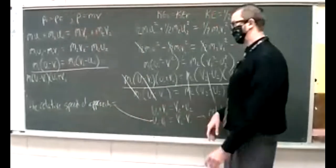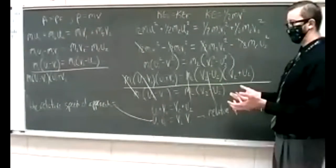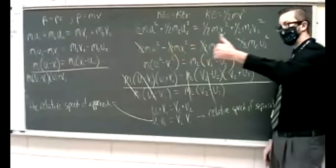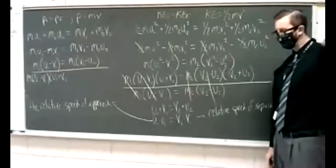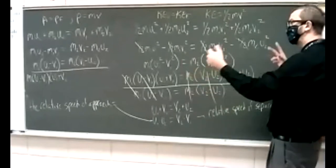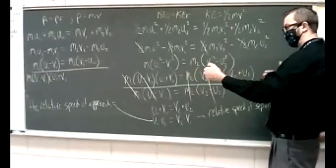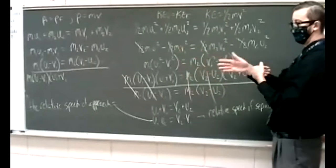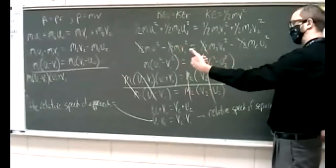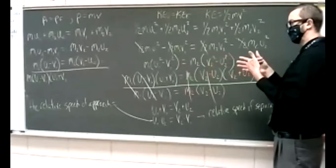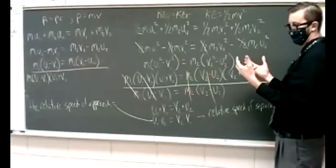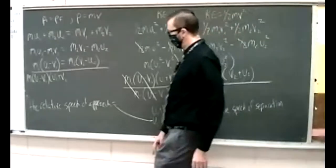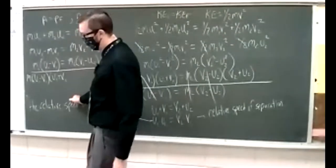What if you're going in opposite directions? If you're going 75 this way and a car passes you going 75 the other way on the opposite lane of the highway, two cars each going 75 miles per hour see each other at 150. So for objects going in opposite directions, we add their speeds to get the relative speed.